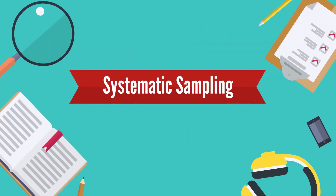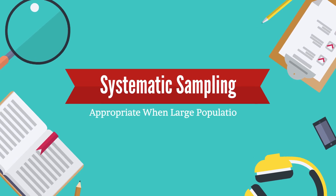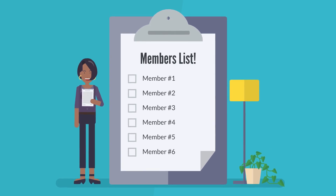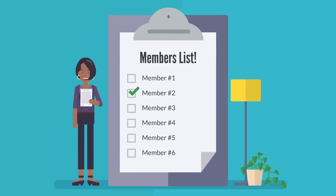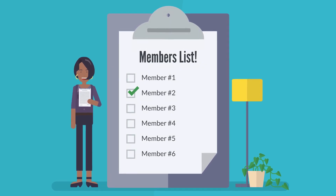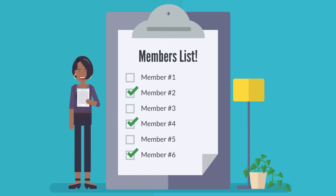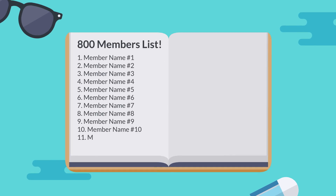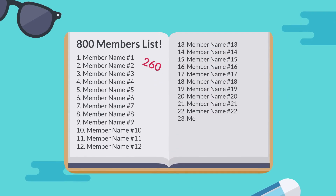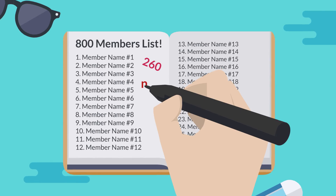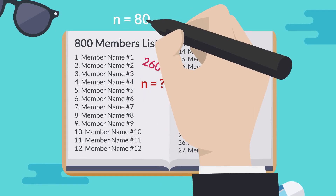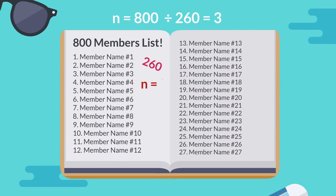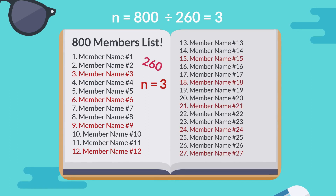Systematic sampling is usually more appropriate when large populations are involved and complete lists of the members are available. The first member of the sample is randomly chosen from a numbered population list, then starting at that point, every nth object or person is selected. For example, your numbered list has 800 names and you determine a sample size of 260 would be adequate. To determine the value of n, you divide 800 by 260, giving you a result of 3. Therefore, you are going to take every third member of the population from the starting point.